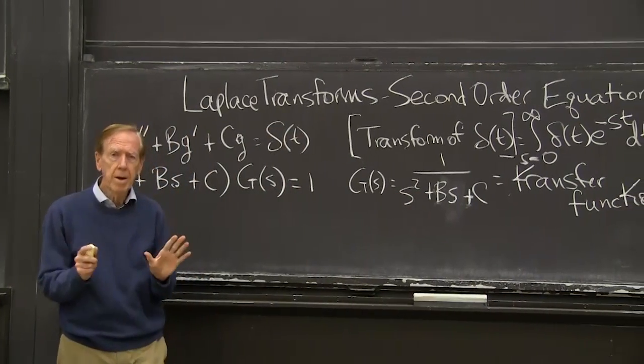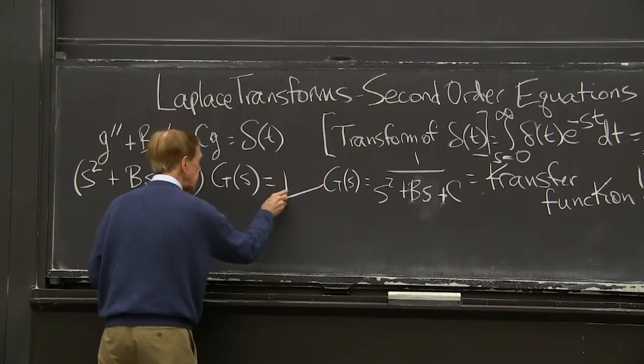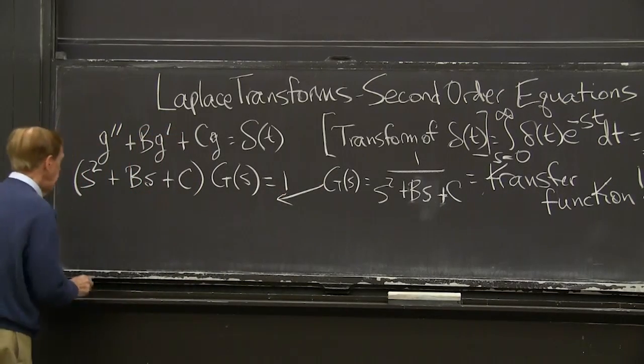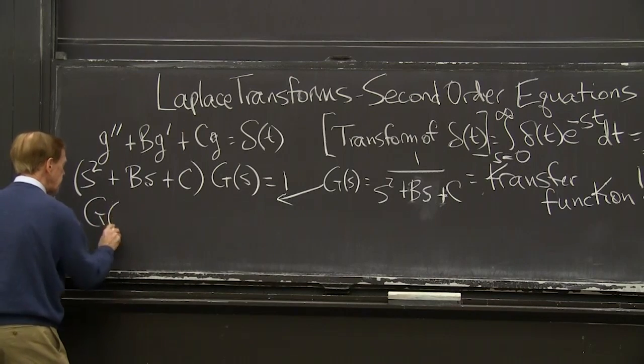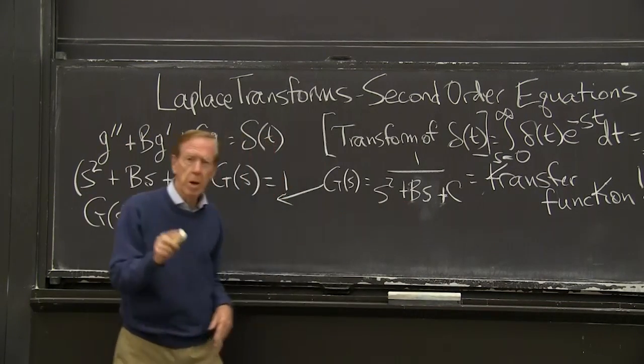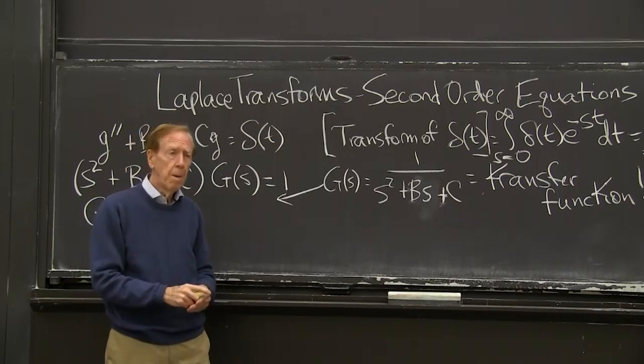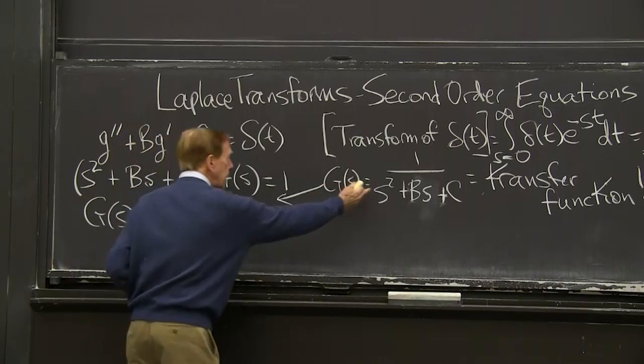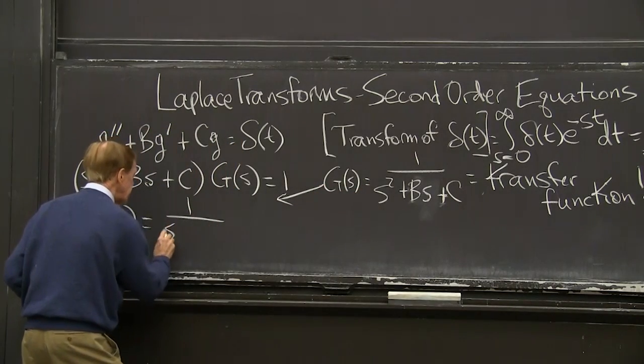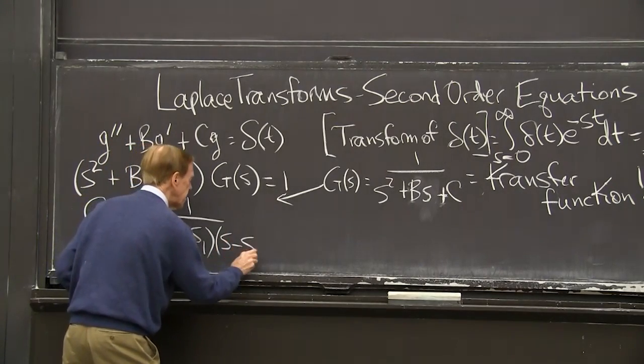The whole idea of partial fractions is split this. So this g of s, final step, is g of s. You remember that this is the polynomial that has the two roots, s1 and s2. I'm going to write that as 1 over s minus s1 times s minus s2.